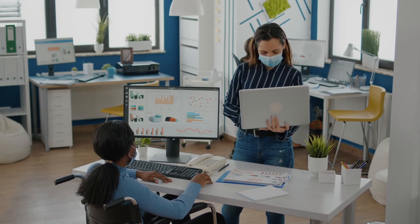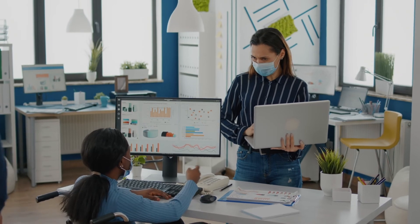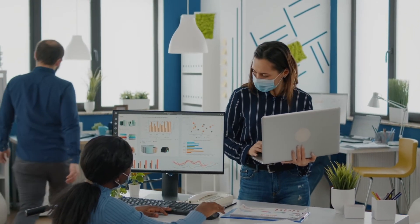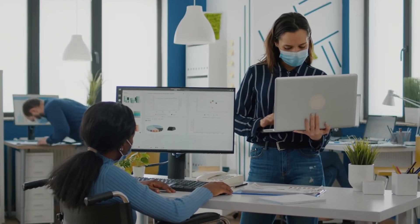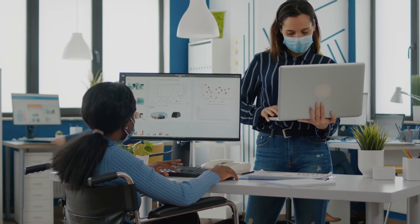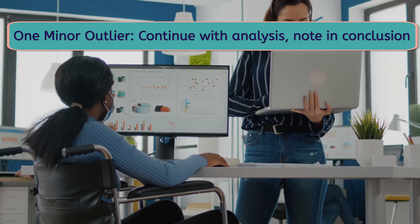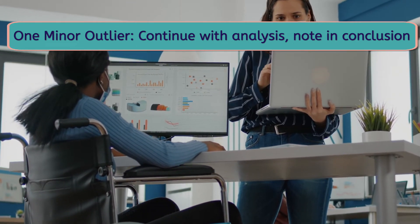Outliers can cause problems with data analysis, so as a scientist, you have to decide if it should be included in your data, thrown out with the assumption that it was something beyond your control, or if maybe it indicates that your whole experiment needs to be repeated. In our case, the outlier was minor, so I think we can continue as is, but we should always note the presence of an outlier in our conclusion.